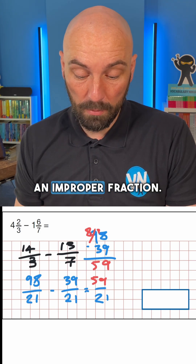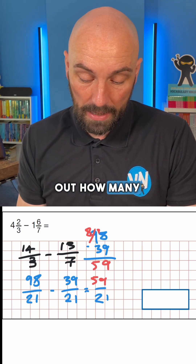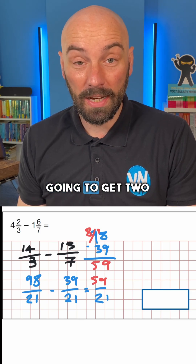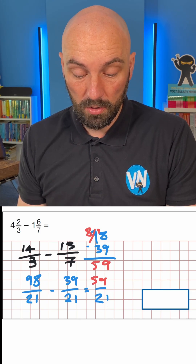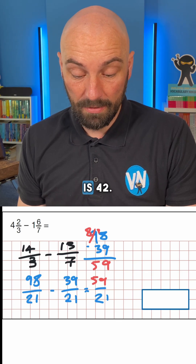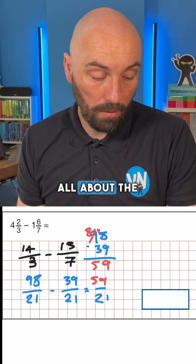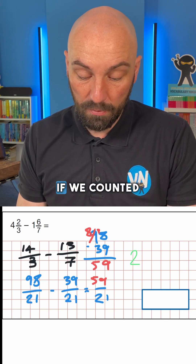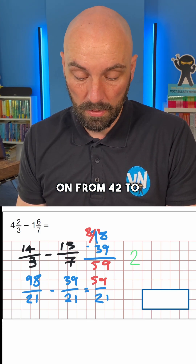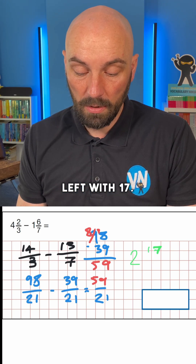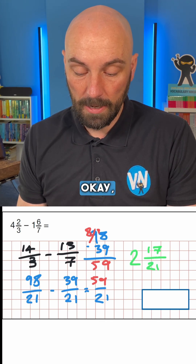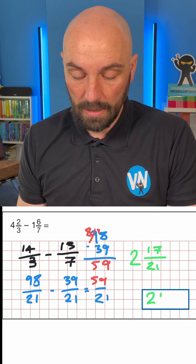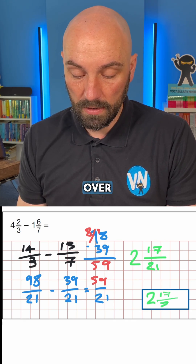At that point we're left with an improper fraction, so we need to work out how many times the denominator goes into the numerator. We're definitely going to get two wholes because 21 plus 21 is 42, and then it's about the remainder. If we count on from 42 to 59, we're left with 17. So the answer is 2 and 17 over 21.